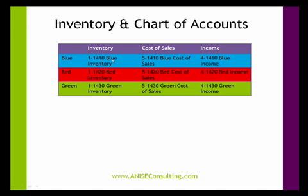So blue inventory may be 50 different items that fall under the blue category. I track the inventory value against 1-1410, which is an asset account. I track the cost of sales of the blue items against 5-1410, which is a cost of sales account. And I track the income against 4-1410, which is the blue income account.